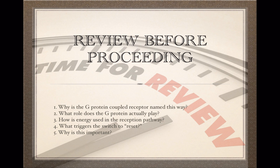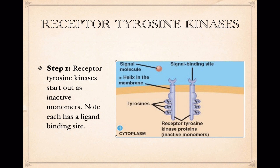Receptor tyrosine kinases are receptor proteins located in the plasma membrane, and they start out as inactive monomers. Looking at this picture, here is the plasma membrane and the extracellular matrix. A signal molecule or ligand has a shape that allows it to fit a receptor protein — in this case the receptor is called a tyrosine kinase. Notice that these tyrosine kinases are currently separated from each other, so we call them monomers, and no ligand has bonded to the receptor site yet.